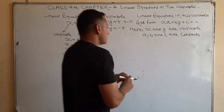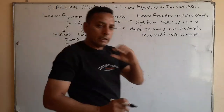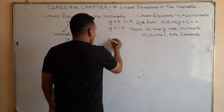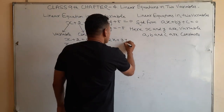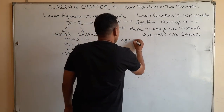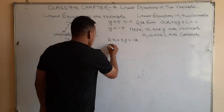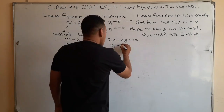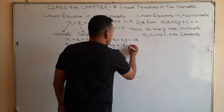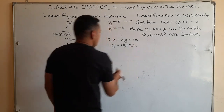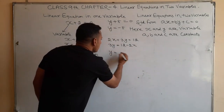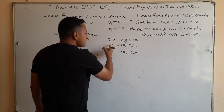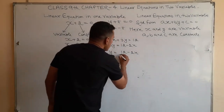Now we find the solution of a linear equation in two variables. For example, 2x plus 3y is equal to 12. Here we can write y is equal to 12 minus 2x divided by 3.